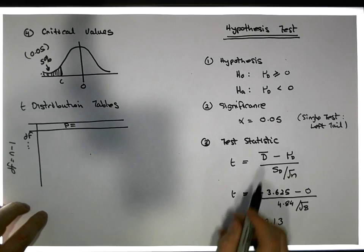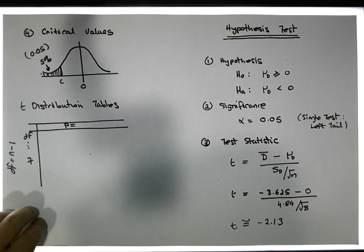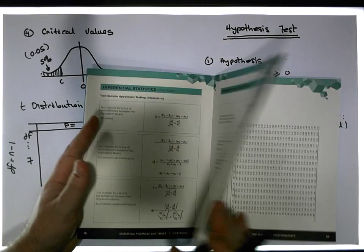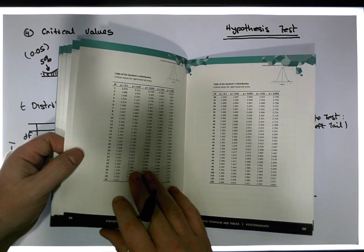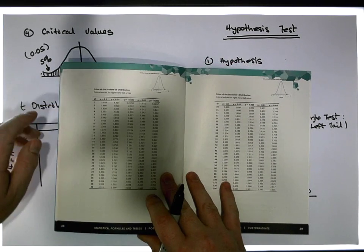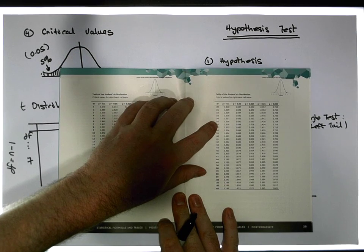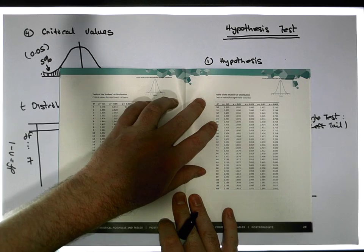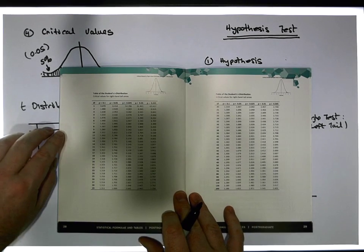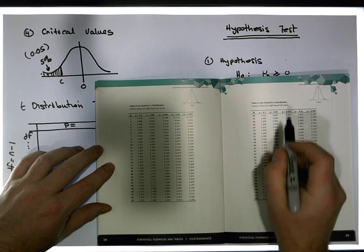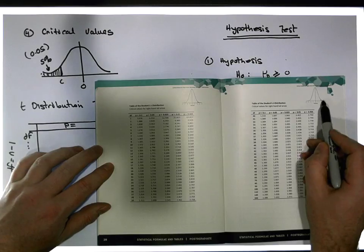In this case it's going to be eight minus one, which gives us a degrees of freedom of seven. The tables we're going to use were generated using Excel, and these tables are set up to specify how much area there is in the right-hand tail.